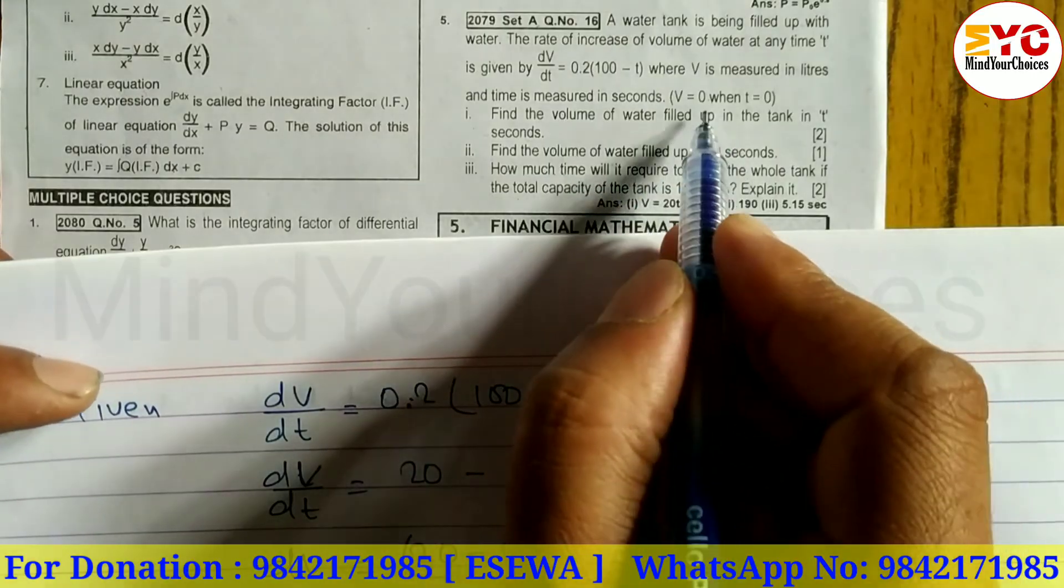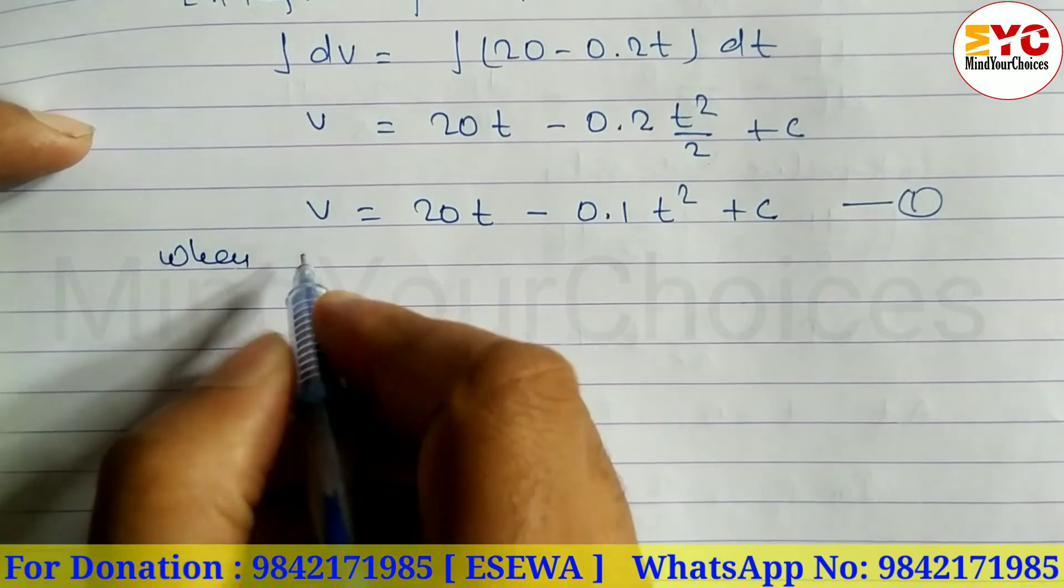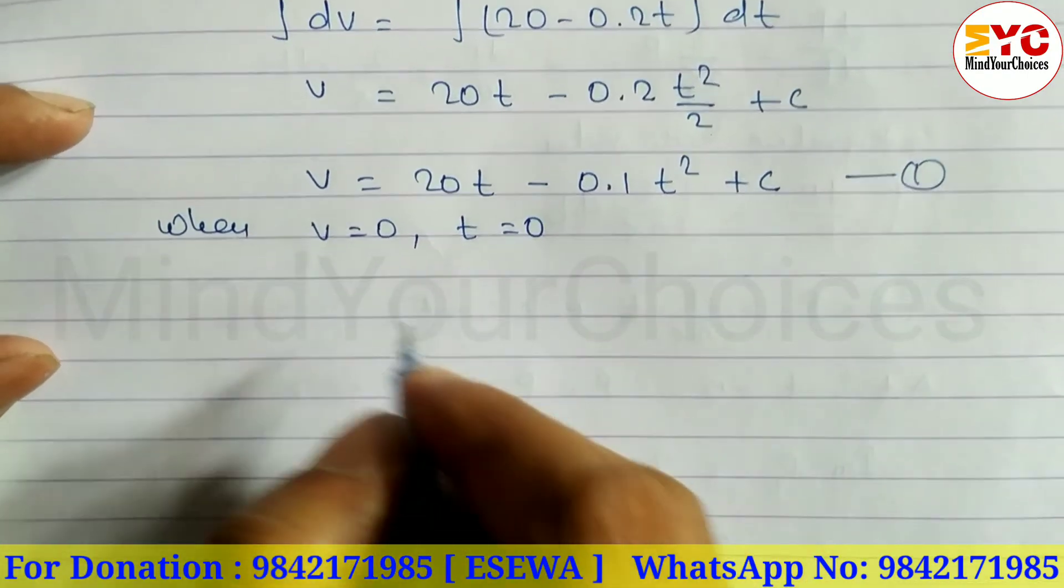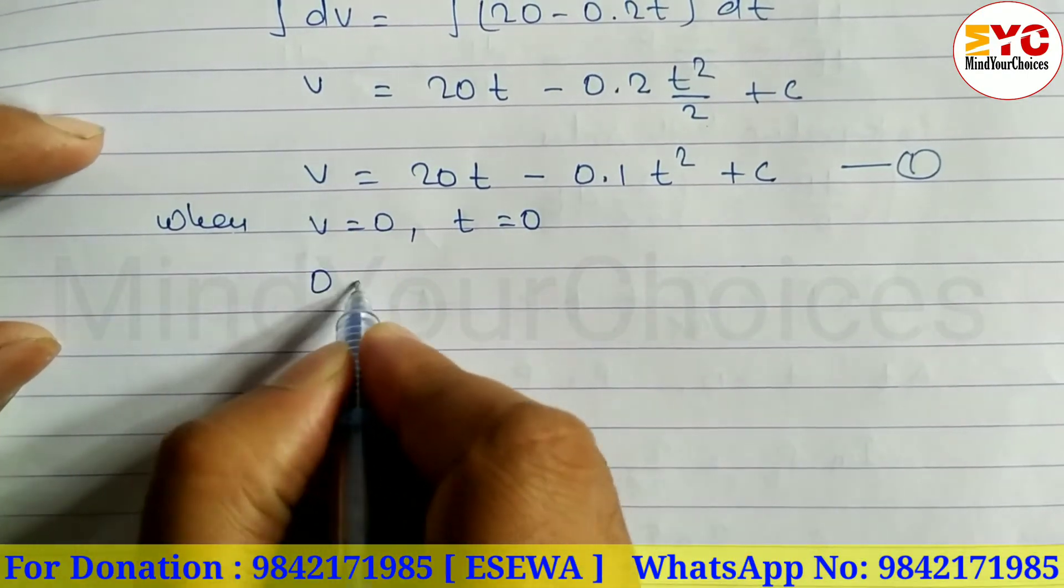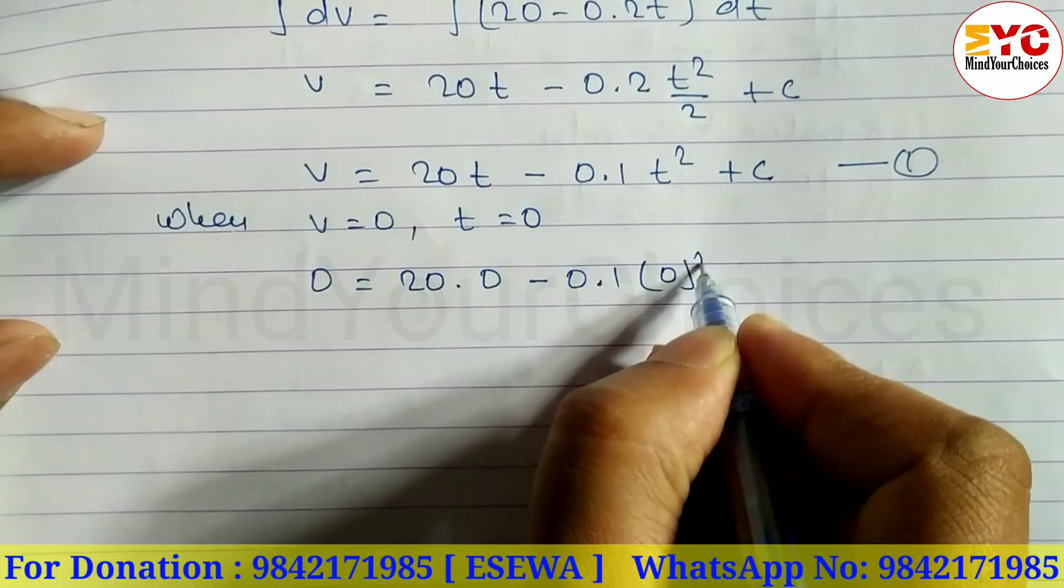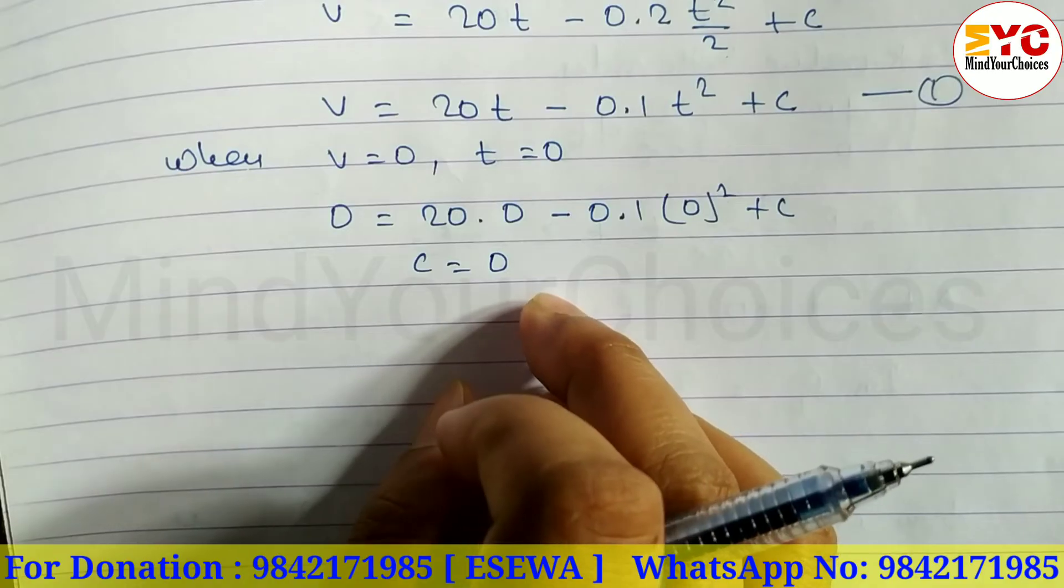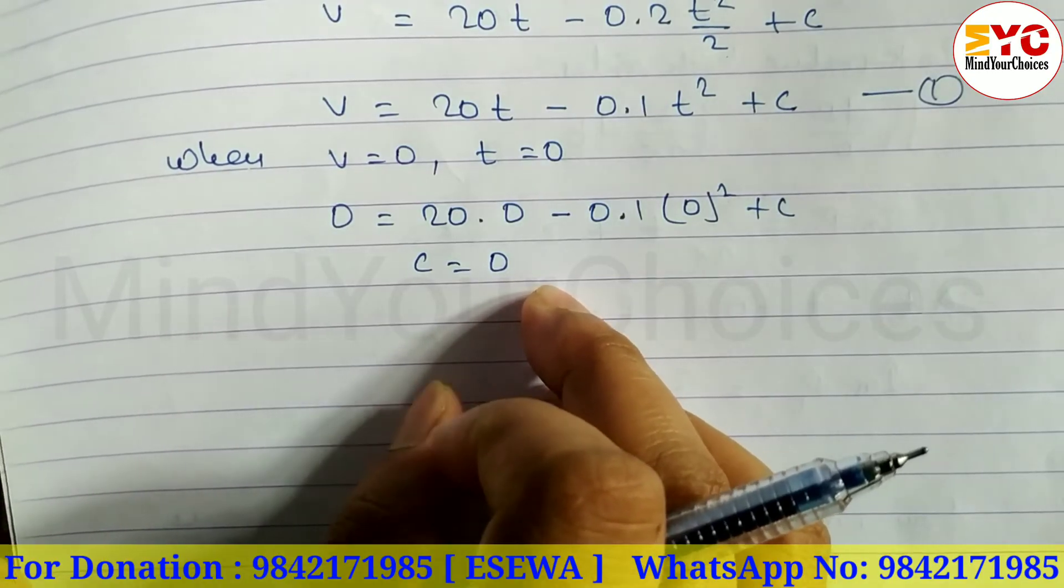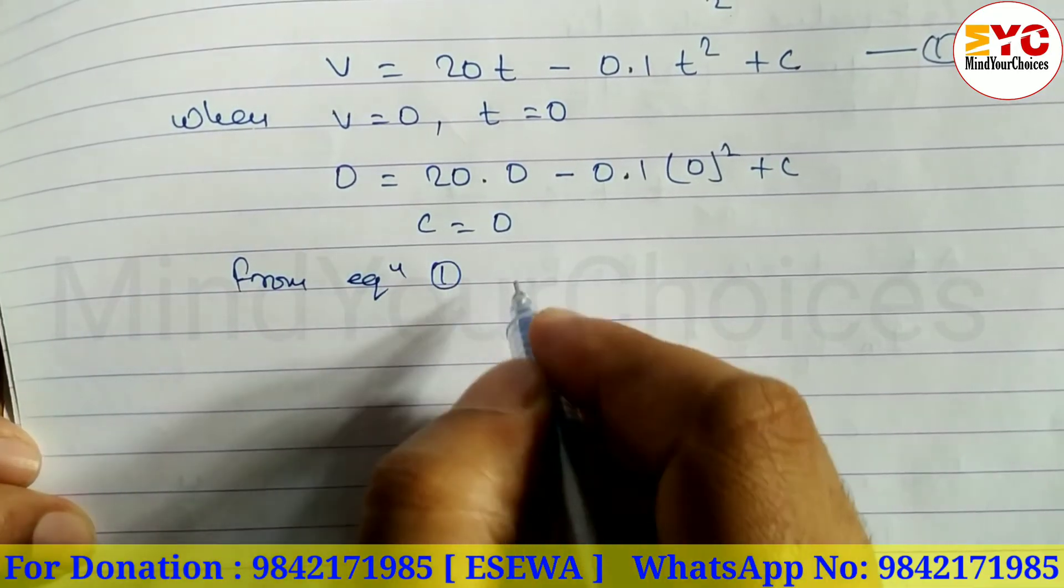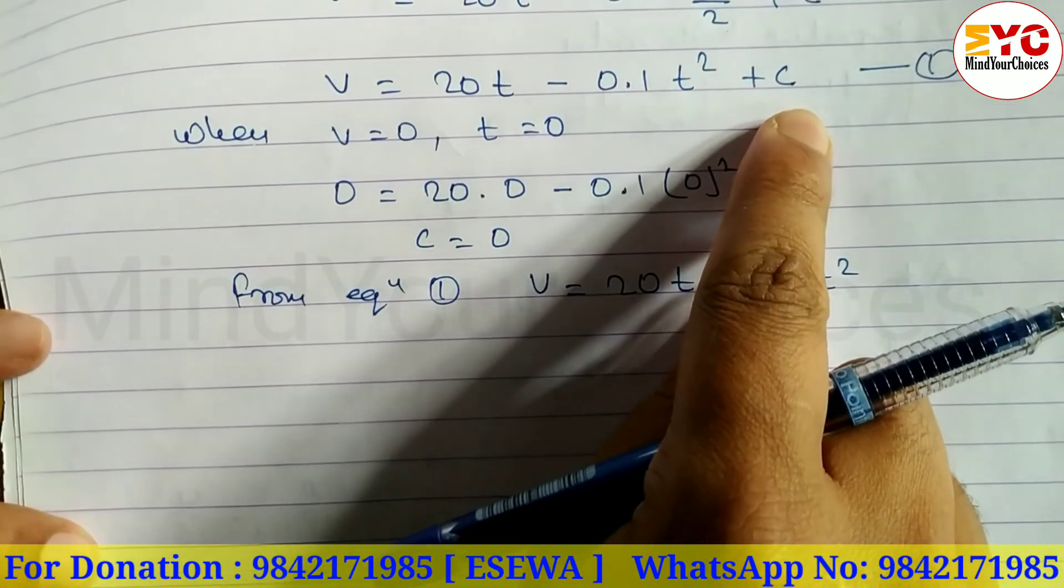According to the question, when V equals 0, T equals 0. So we can get the value of C from here. In place of V we put zero, in place of T we put zero: 0 equals 20(0) minus 0.1(0) squared plus C. So we get C equals 0. Now we have to put the value of C in equation 1. From equation 1: V equals 20T minus 0.1T squared.